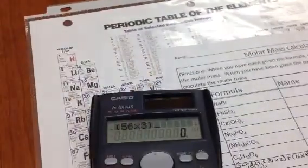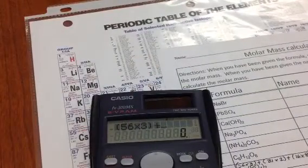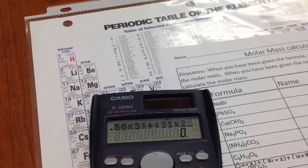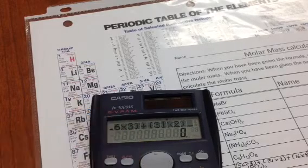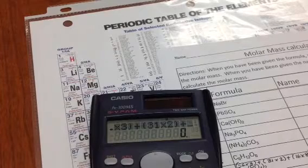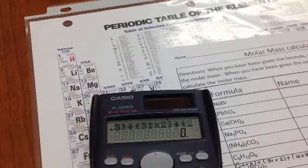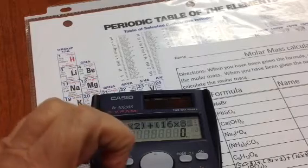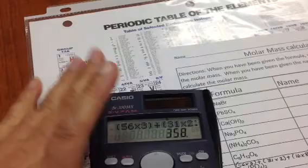And then I hit plus. And then it was parentheses 31 times 2, end parentheses, plus parentheses 16 times 8, end parentheses, and equals.